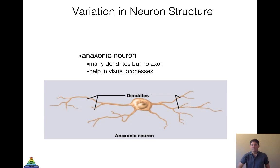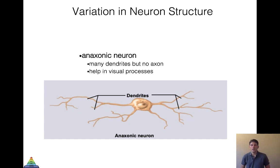Our last type is the anaxonic neuron — they have lots of dendrites but no axon. They help in our visual processes. We won't spend a whole lot of time talking about these.